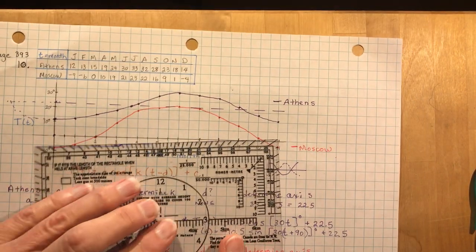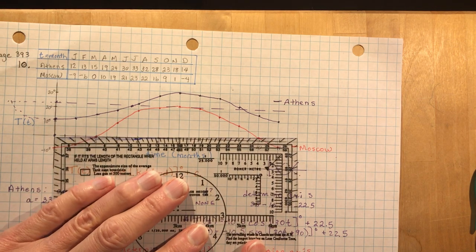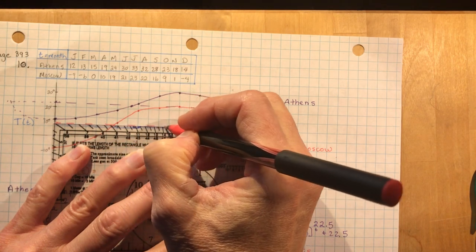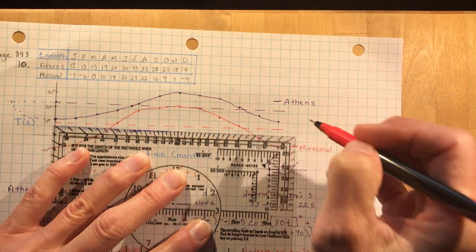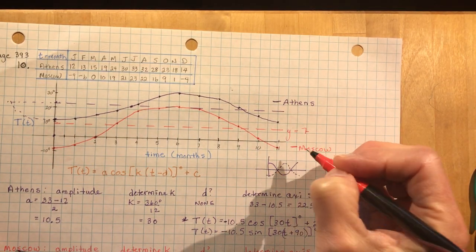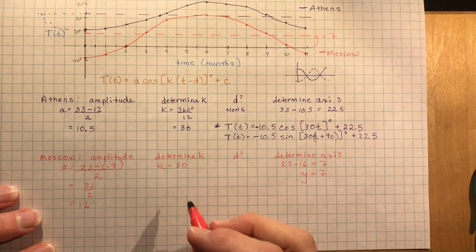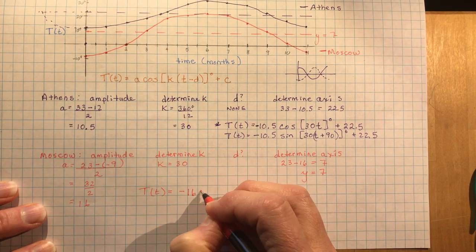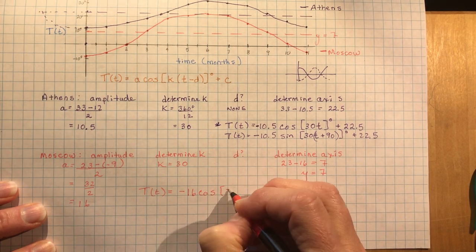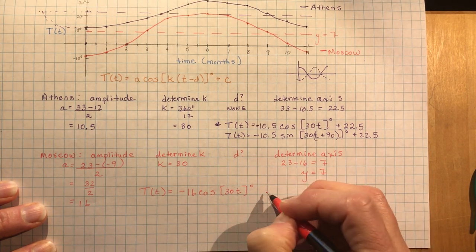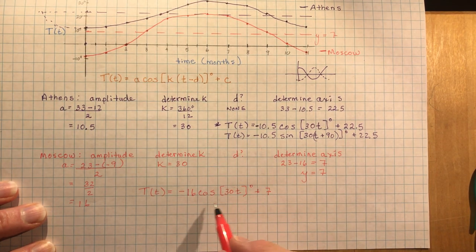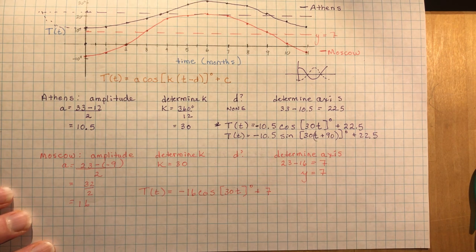It's always good to draw the axis on the graph to double-check — if it doesn't look like it's halfway through your graph, reevaluate your answer. The axis at y = 7 looks correct here. So the full equation for Moscow is: T(t) = −16·cos(30t°) + 7. You could convert this to a negative sine function as well, but this form is clean and easy to work with.